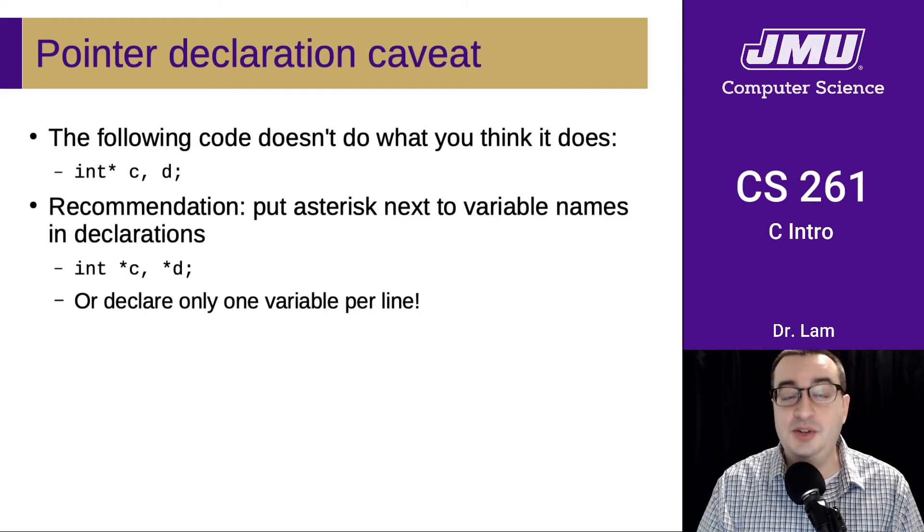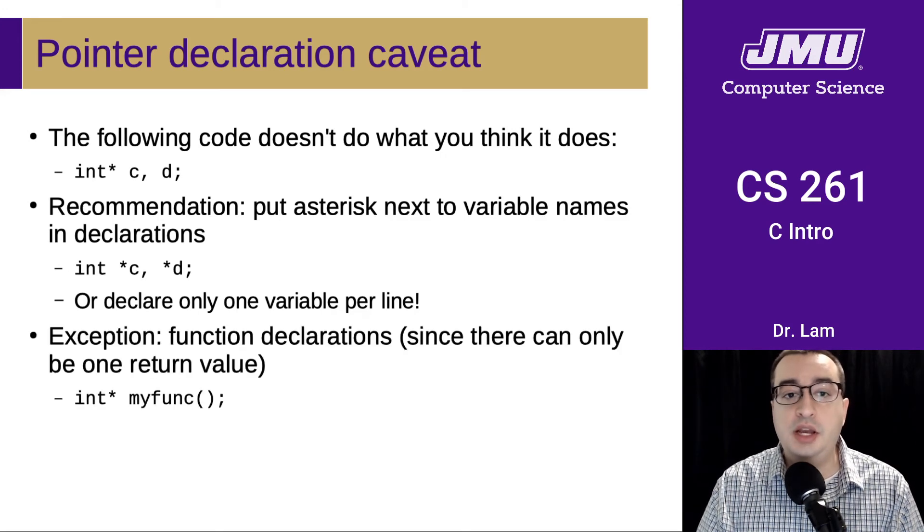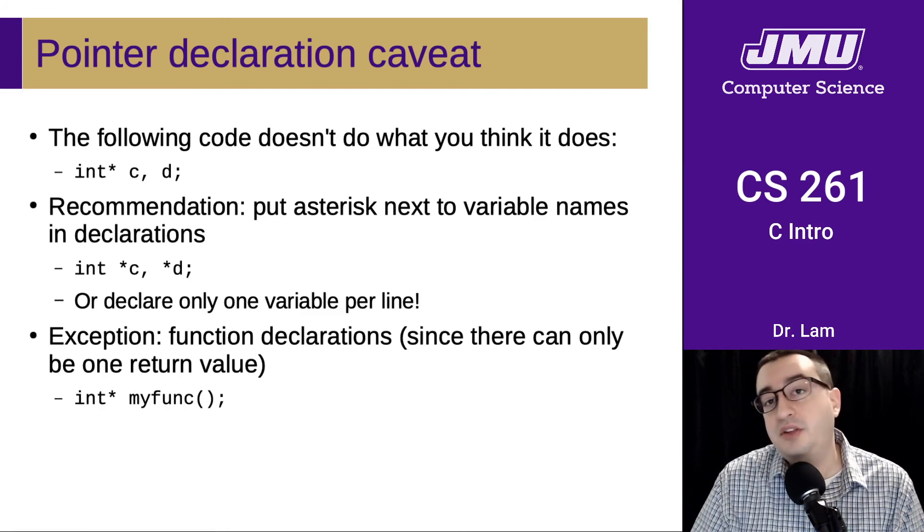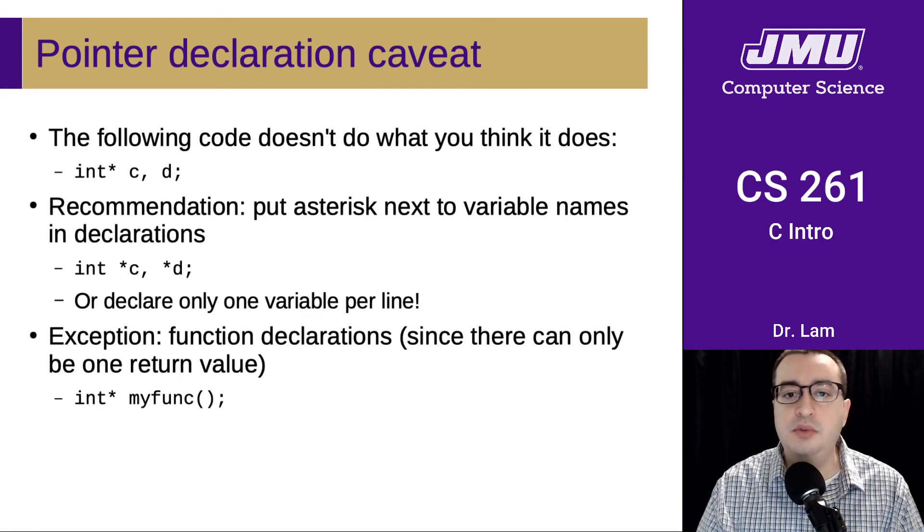Of course, it would be better to use the prior recommendation and only declare one variable per line. One exception to this that I'm going to use is that I'm going to put the variable type or the star next to the variable type for function return values. And that's because a function can only have one return value, and so it's a little less ambiguous there.